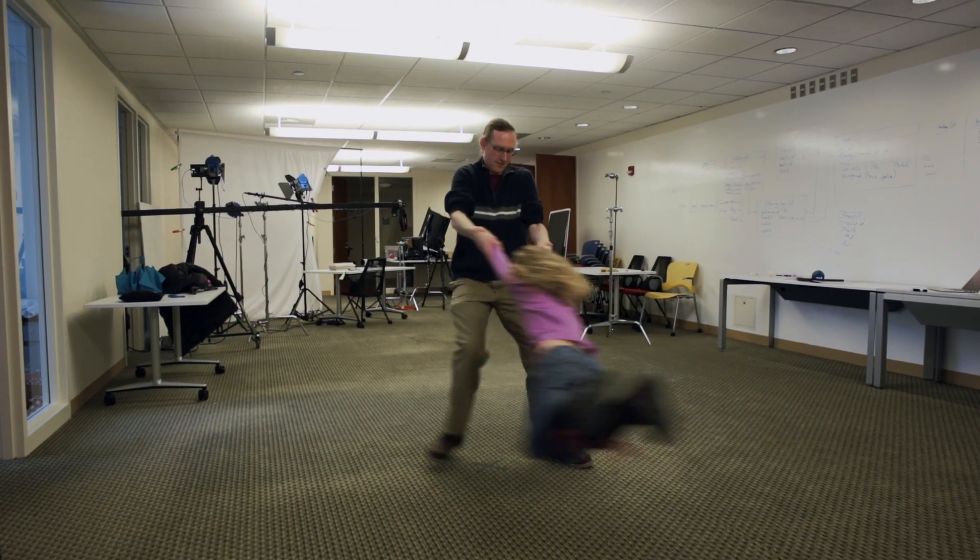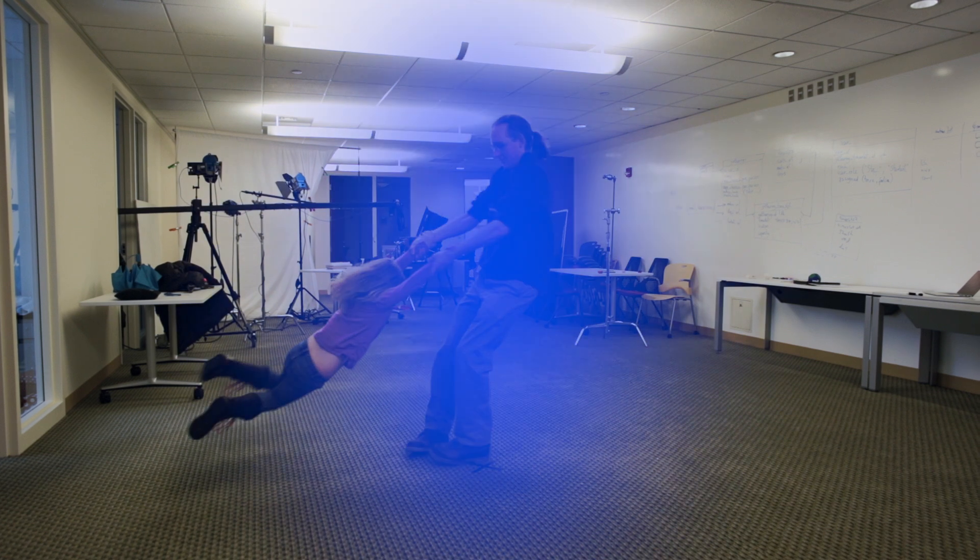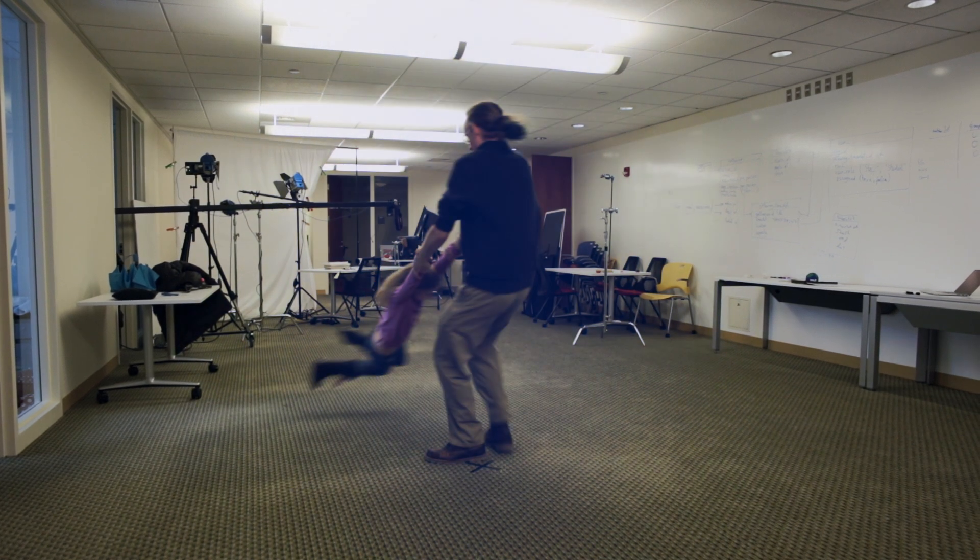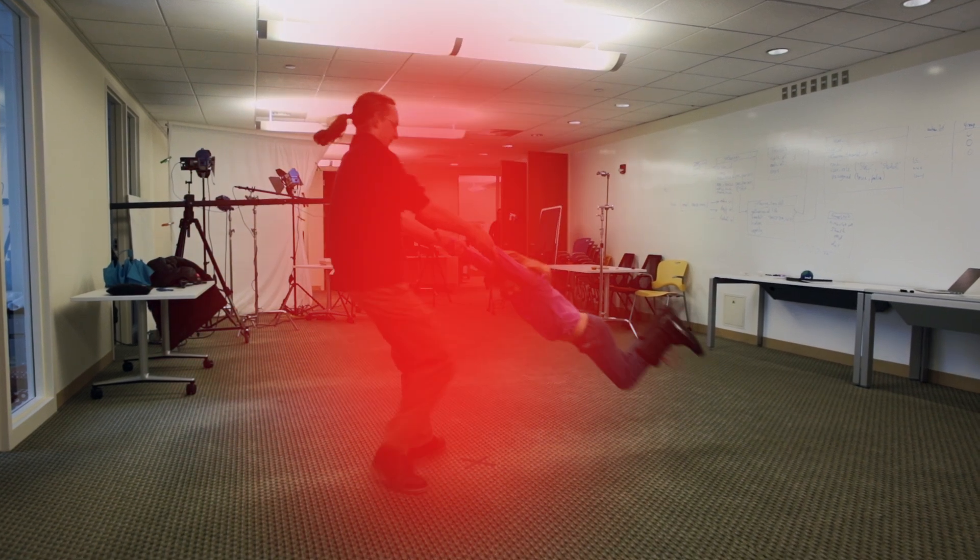As the exoplanet moves away from us, the star comes towards us, so the light becomes ever so slightly more blue. On the other side of the orbit, as the star moves away from us, the light from the star becomes slightly more red.